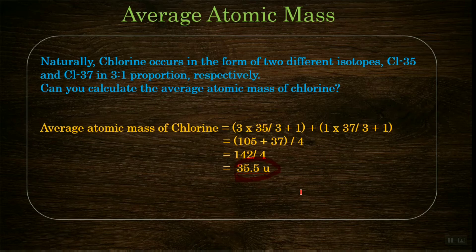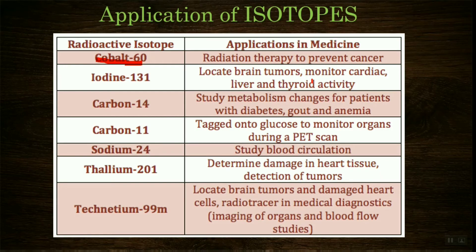The applications of isotopes include many medicinal purposes. Cobalt-60 is used in radiation therapy to treat cancer. Iodine-131 is used to locate brain tumors and monitor cardiac, liver, and thyroid activity. Carbon-14 is used to study metabolic changes in patients with diabetes. Carbon-11 tagged on glucose monitors organs during PET scans. Sodium-24 studies blood circulation, thallium-201 determines damage in heart tissues and detects tumors, and technetium-99m locates brain tumors and damaged heart cells.